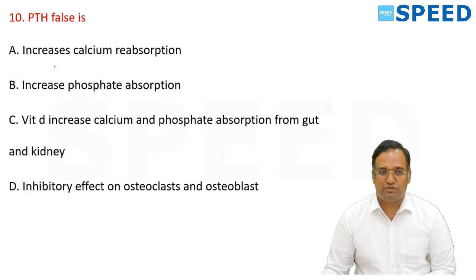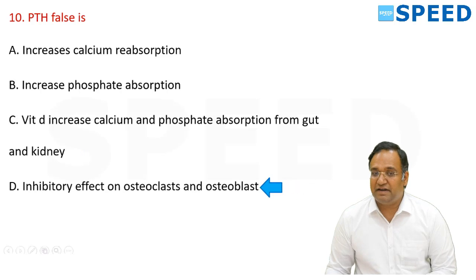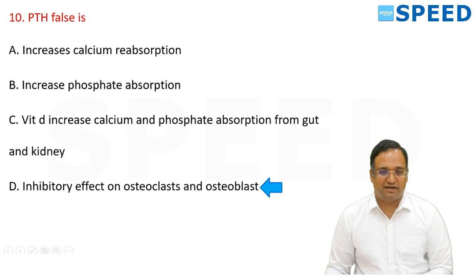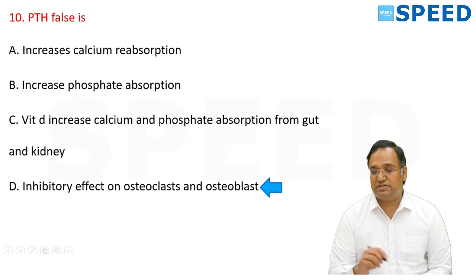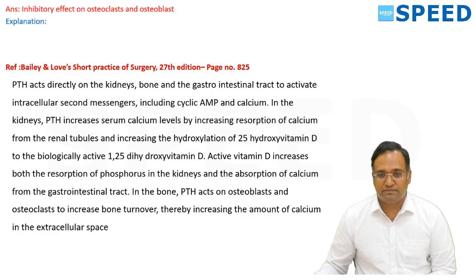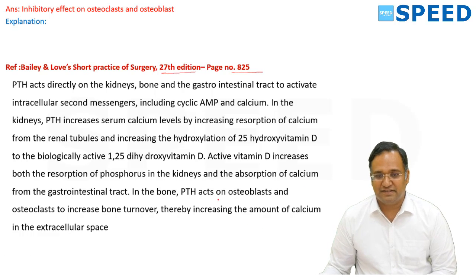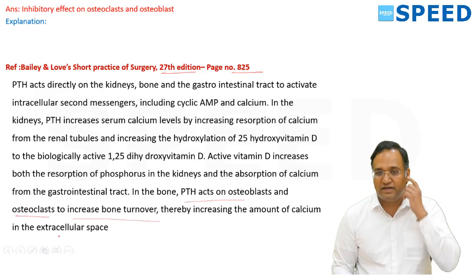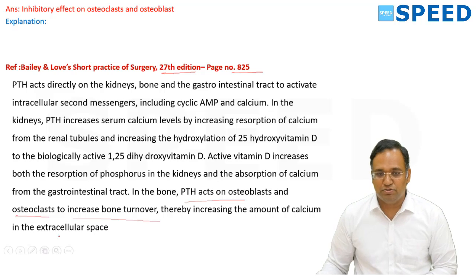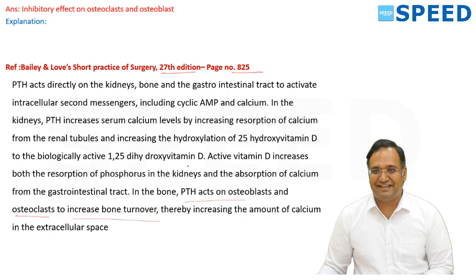Regarding PTH — which is false? PTH increases calcium absorption and increases phosphate absorption via vitamin D, increasing calcium and phosphate absorption in the gut and kidney. The false statement is that PTH has an inhibitory effect on osteoblasts and osteoclasts. In fact, PTH induces osteoblastic and osteoclastic activity, causing demineralization of bone. Bailey and Love 27th edition, page 825, clearly states PTH acts on osteoblast and osteoclast to increase bone turnover rate.